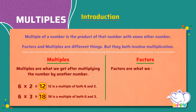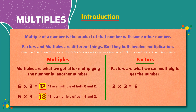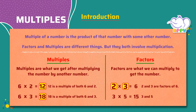Factors are what we can multiply to get the number. Let's look at examples of factors. 2 times 3 equals 6, so 2 and 3 are factors of 6. 3 times 5 equals 15, so 3 and 5 are factors of 15.